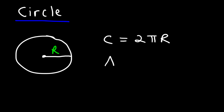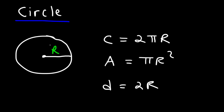The area of a circle is πr squared. The diameter is simply twice the radius — it's the distance between one point on a circle and another point on the opposite side, and the diameter must pass through the center of the circle.